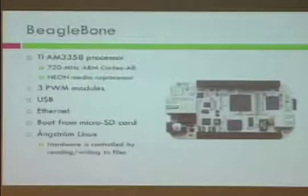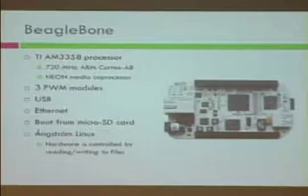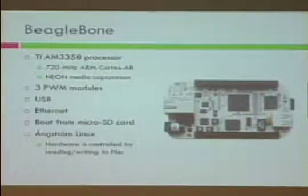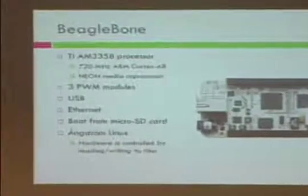Going into more detail on our development board — the BeagleBone features Texas Instruments' brand new processor, which came out in December. This processor is intended for industrial control applications as well as portable media devices such as cell phones and MP3 players. It features a 720 megahertz ARM Cortex-A processor, so it's really souped up for this application, and it also features a Neon media coprocessor.